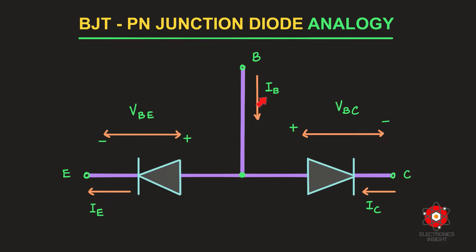For an NPN transistor, the emitter is N-type semiconductor, the base region is P-type semiconductor, and the collector region is again N-type semiconductor. The voltage drop across the first PN junction is the base-to-emitter voltage, and across the second is the base-to-collector voltage. The currents through each diode are dependent on prevailing conditions, since the diodes are connected back to back and not isolated — meaning the emitter current is dependent on both the base and collector currents.